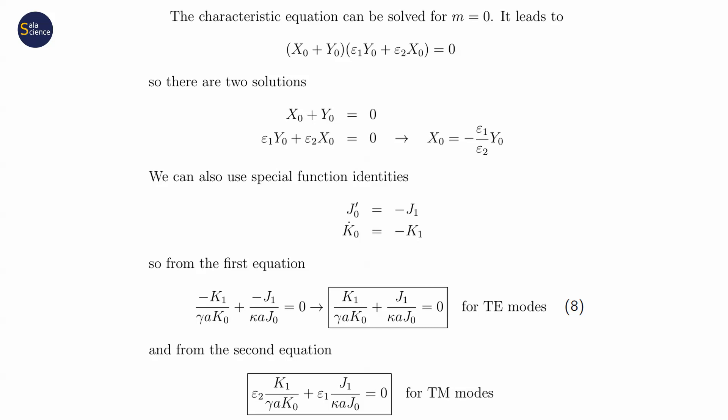Still, we have to solve them numerically or graphically, but it is way easier to use special functions than their derivatives. So we have two equations, one for TE and one for TM. Solutions will once again give us propagation constants beta.